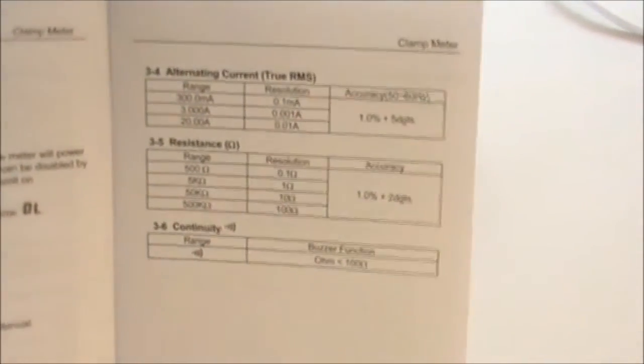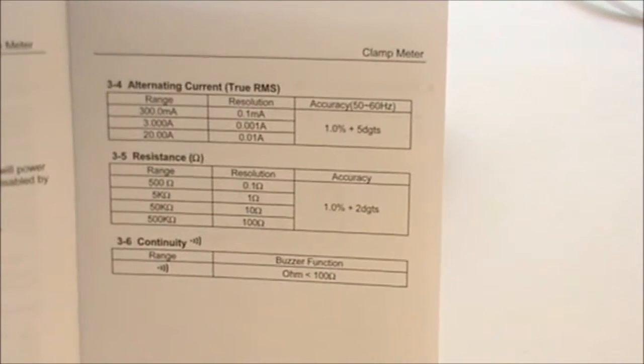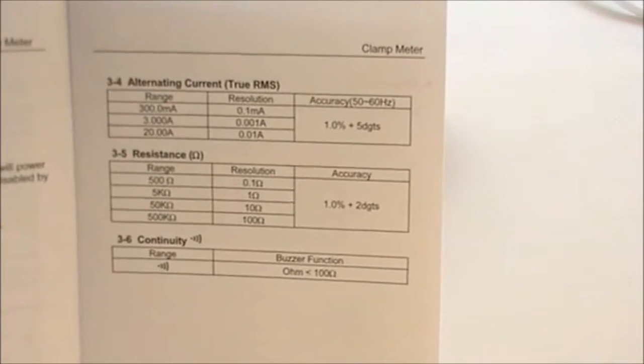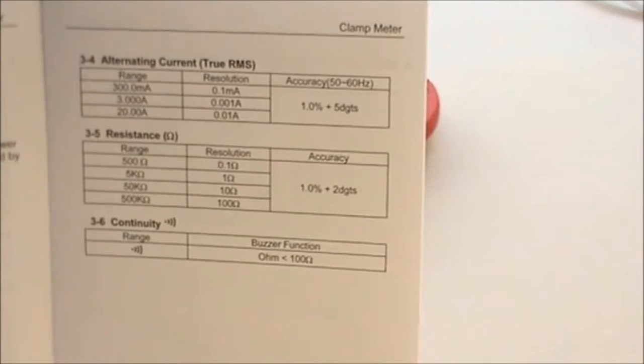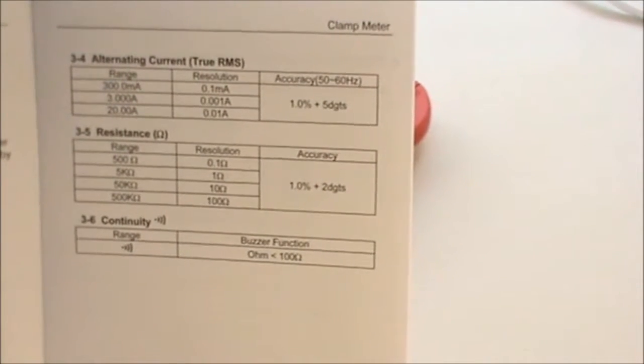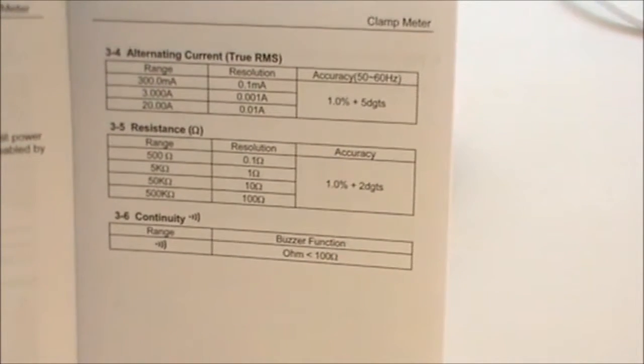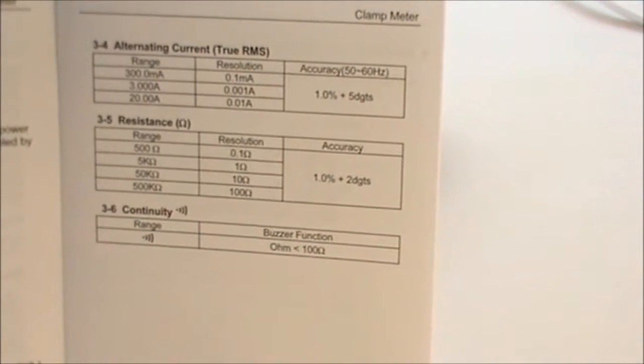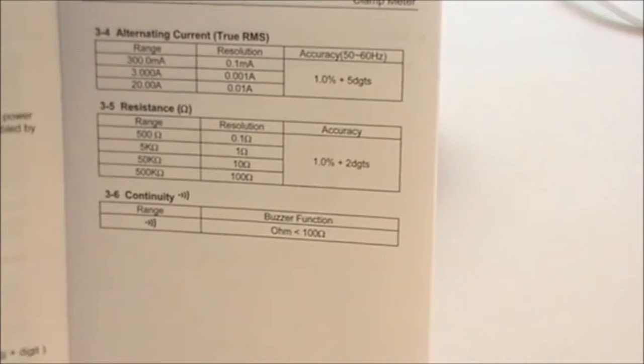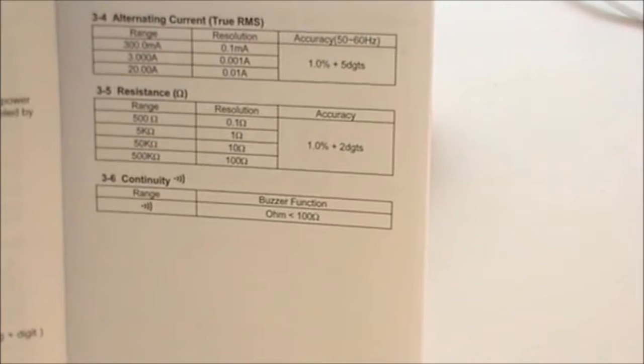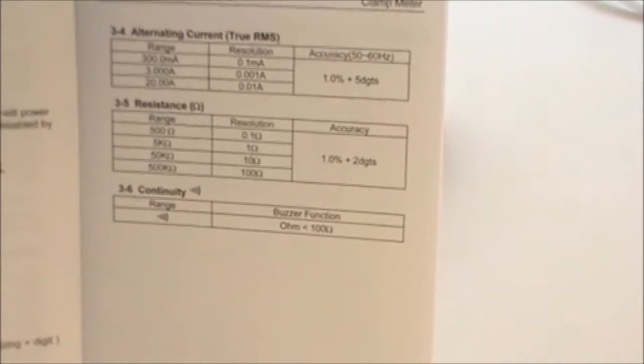The alternating current up to 20 amps, 0.01 of an amp at the full highest range. And again down to 0.1 of a milliamp on the 300 milliamp range. Resistance, 0.01 of an ohm is the greatest sensitivity up to 500k ohms. And continuity, anything under 100 ohms will beep.